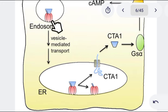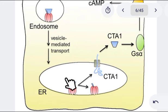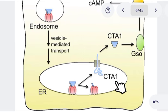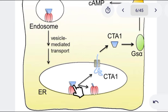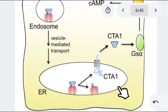This endosome is going to take the cholera toxin to the endoplasmic reticulum of the enterocytes. In the endoplasmic reticulum, the cholera toxin is going to be cleaved. Specifically, the A subunit is going to be cleaved into cholera toxin A1 and cholera toxin A2. So the A subunit, which is made up of A1 and A2 parts, is going to be cleaved into cholera toxin A1 and cholera toxin A2.